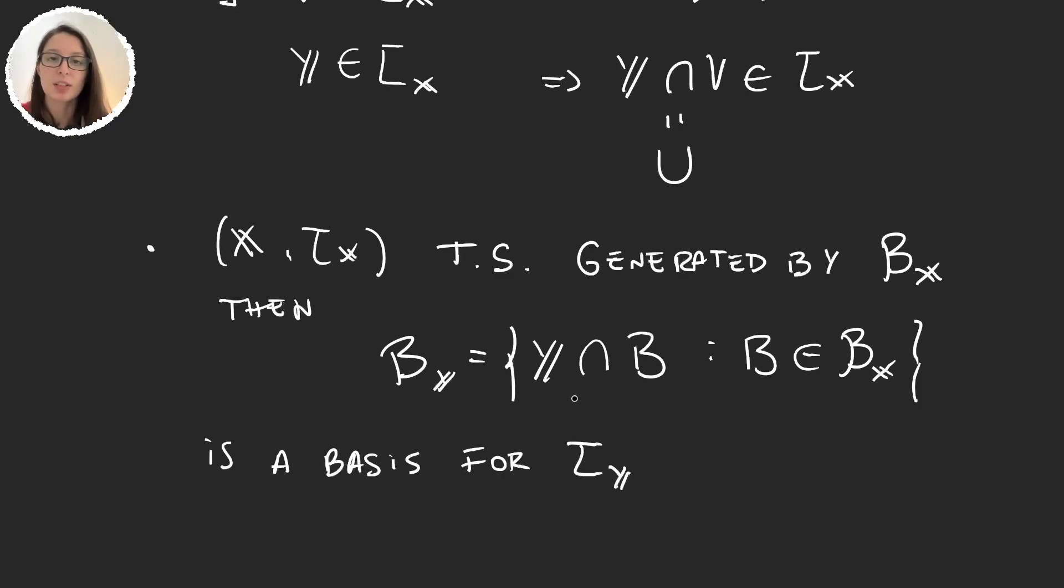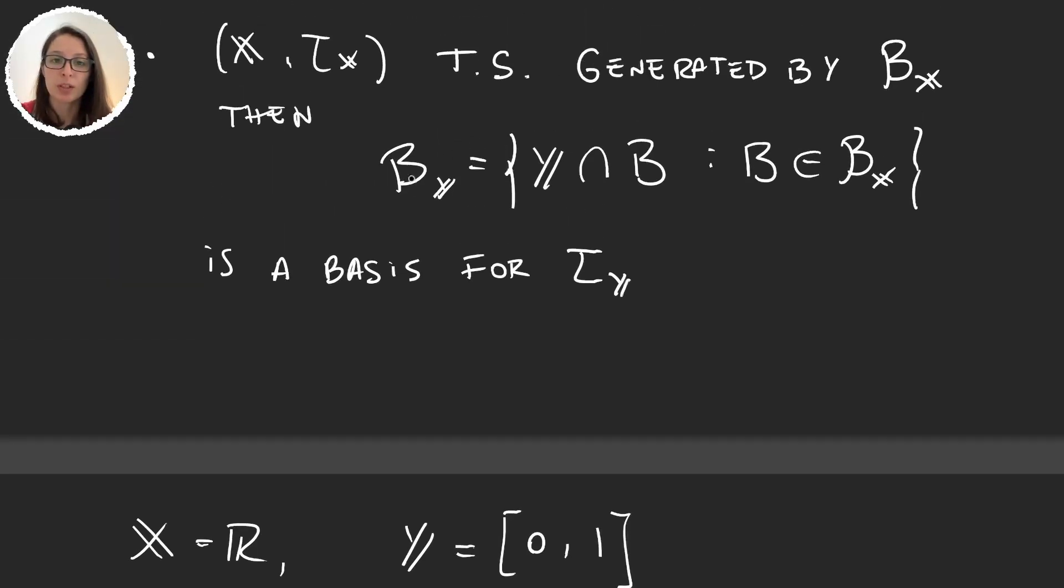Let's use this second result in an example with a real line. Let's take X to be the real numbers with the standard topology. Let's say Y to be [0,1]. So we know that the standard topology is generated by open intervals. And so we ask, what is now the subspace topology for this set Y? From this result, we know that it's going to be the topology generated by intersections of the [0,1], our set, with open intervals.